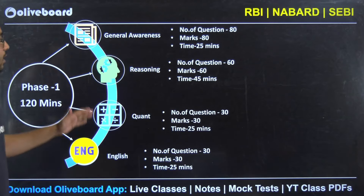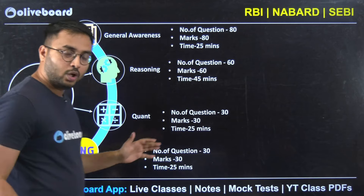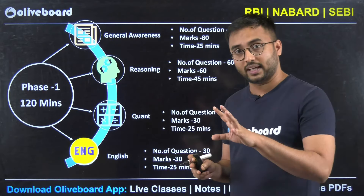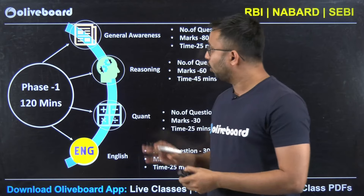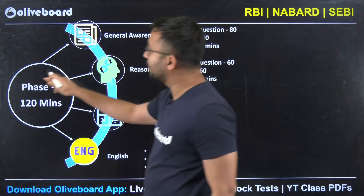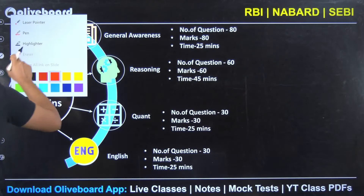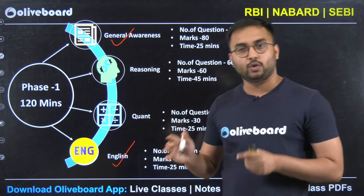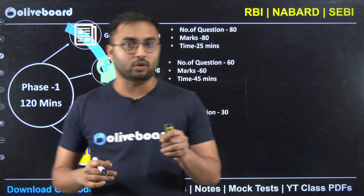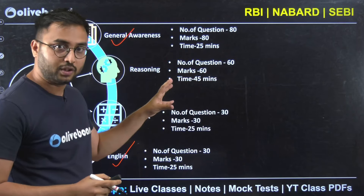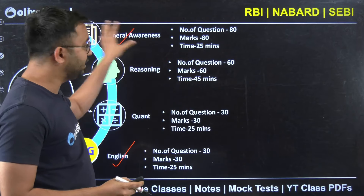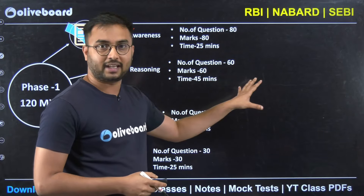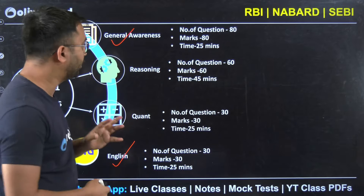We will first discuss phase 1. We can bring a similar video for phase 2 — just let me know in the comments if you need phase 2 free resources, covering answer writing practice, free questions, MCQ practice, etc. For phase 1, we all know there are 4 sections: General Awareness, Reasoning, Quant and English. Understand the pattern and strategy first, then we will look at each subject and possible resources.